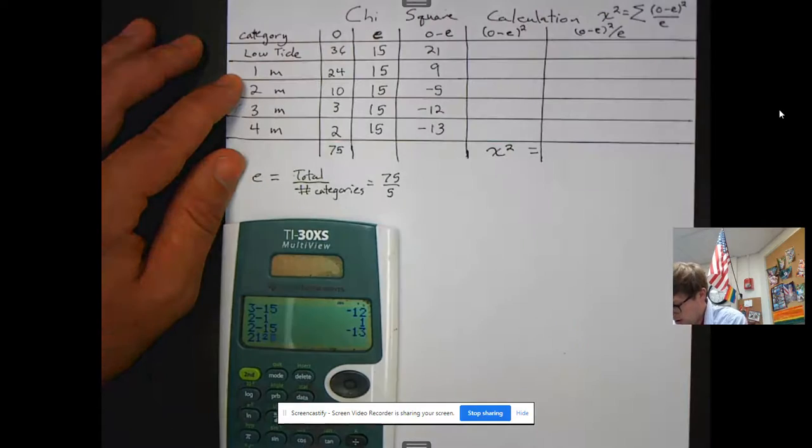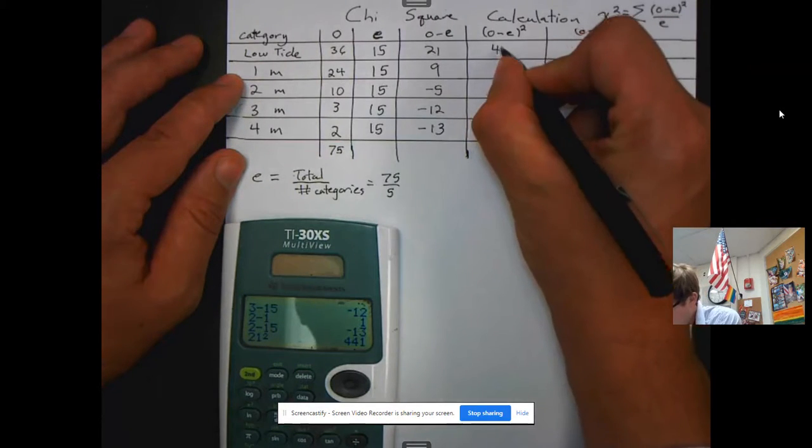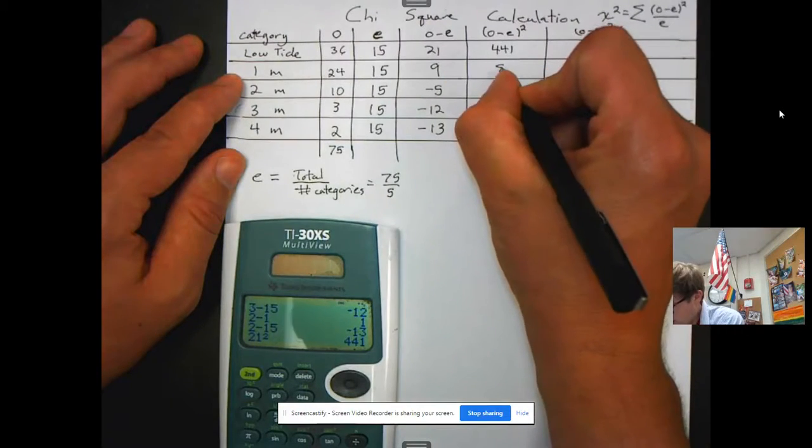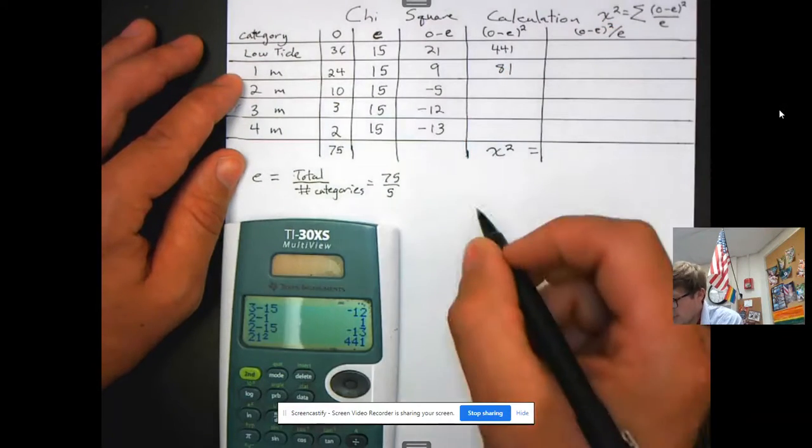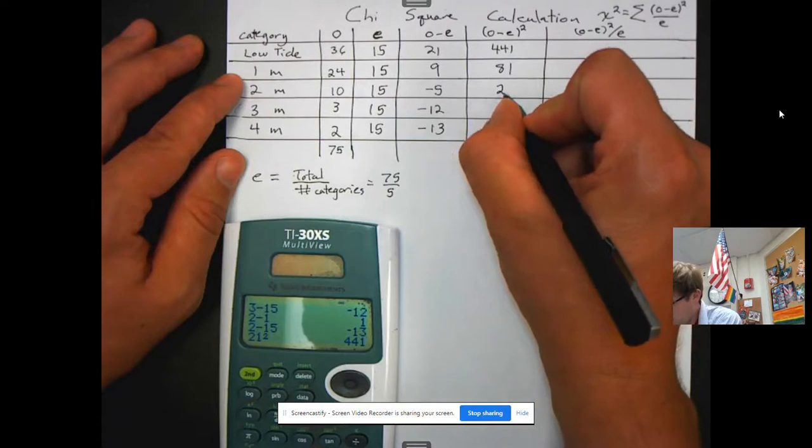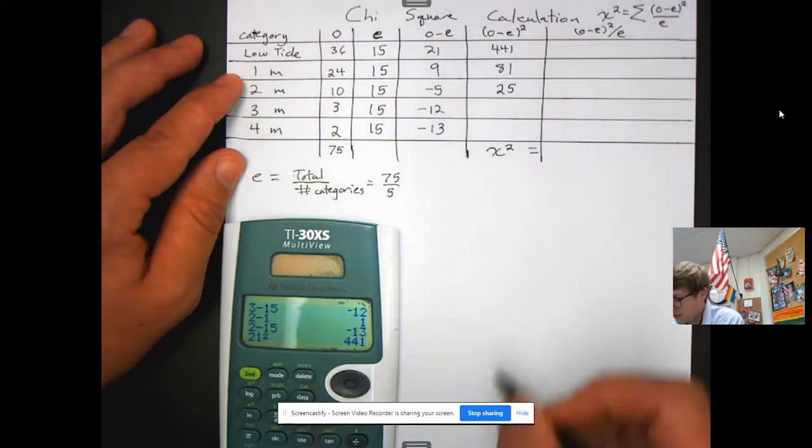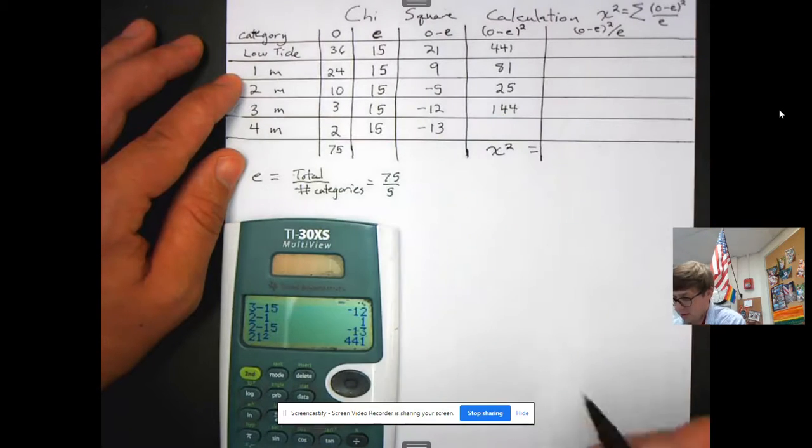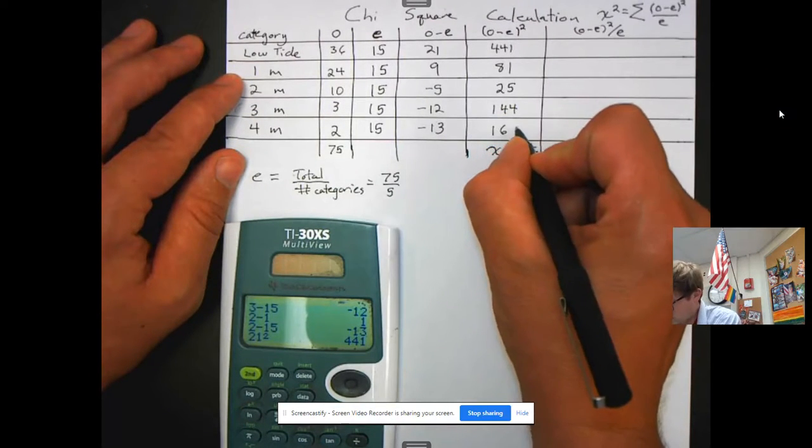So, 21 squared, 441. 9 squared is 81. Negative 5 times negative 5 is 25. 12 squared is 144. And 13 squared is 169.